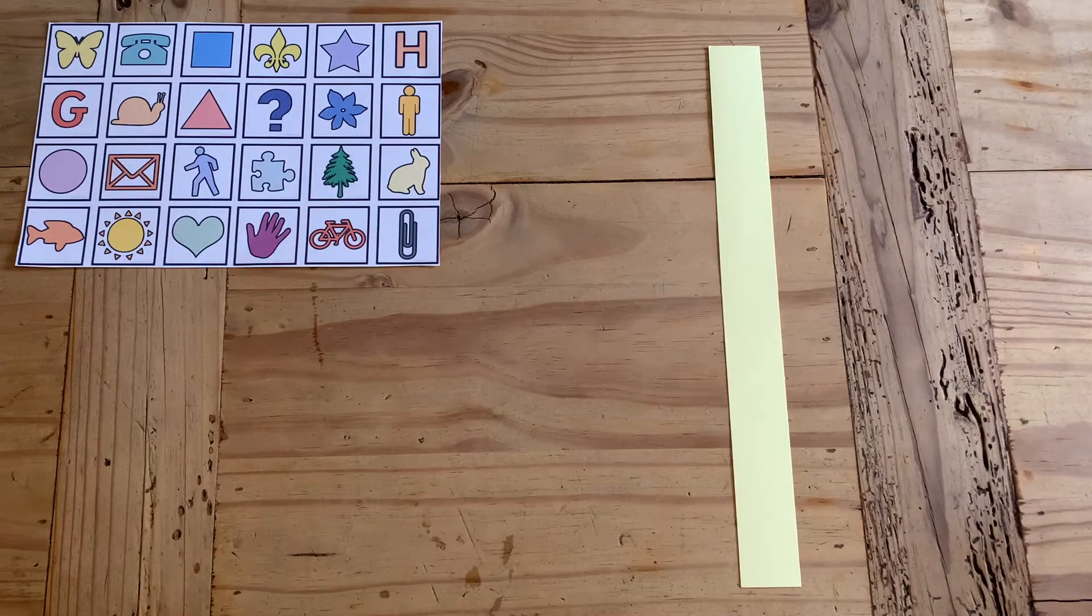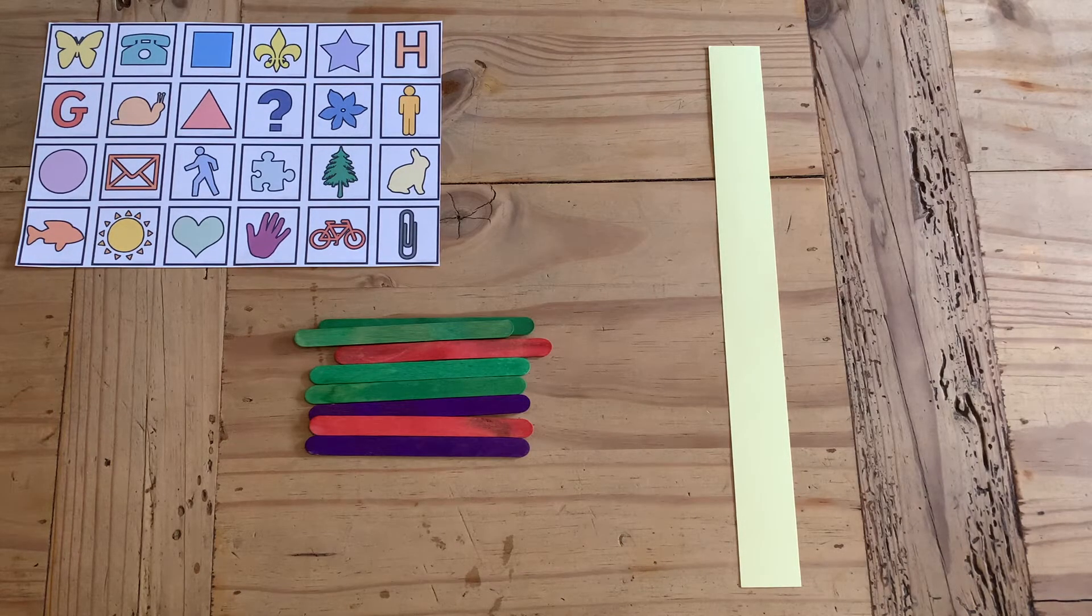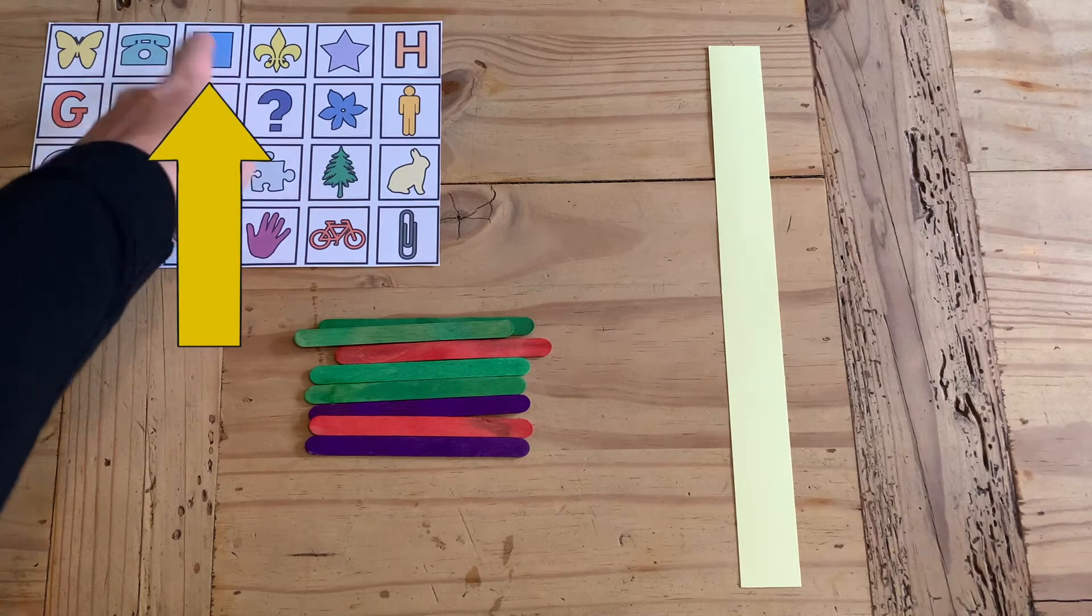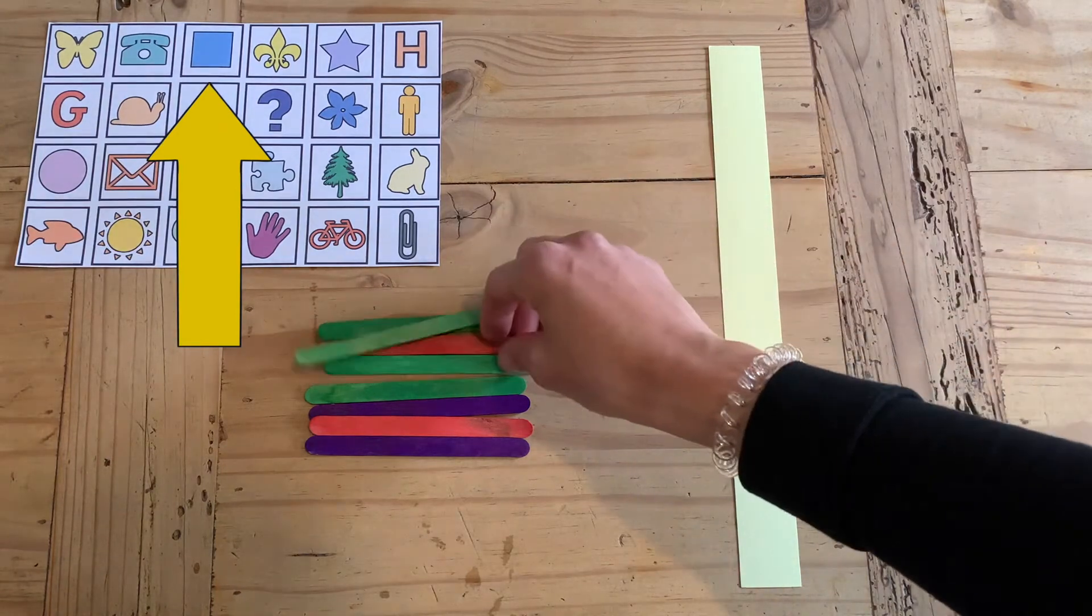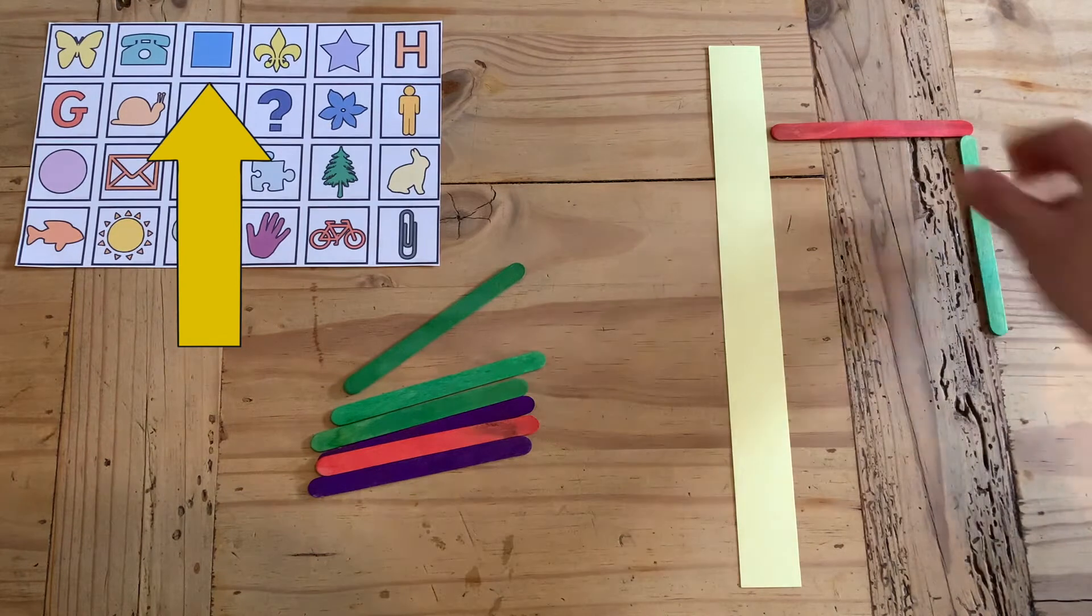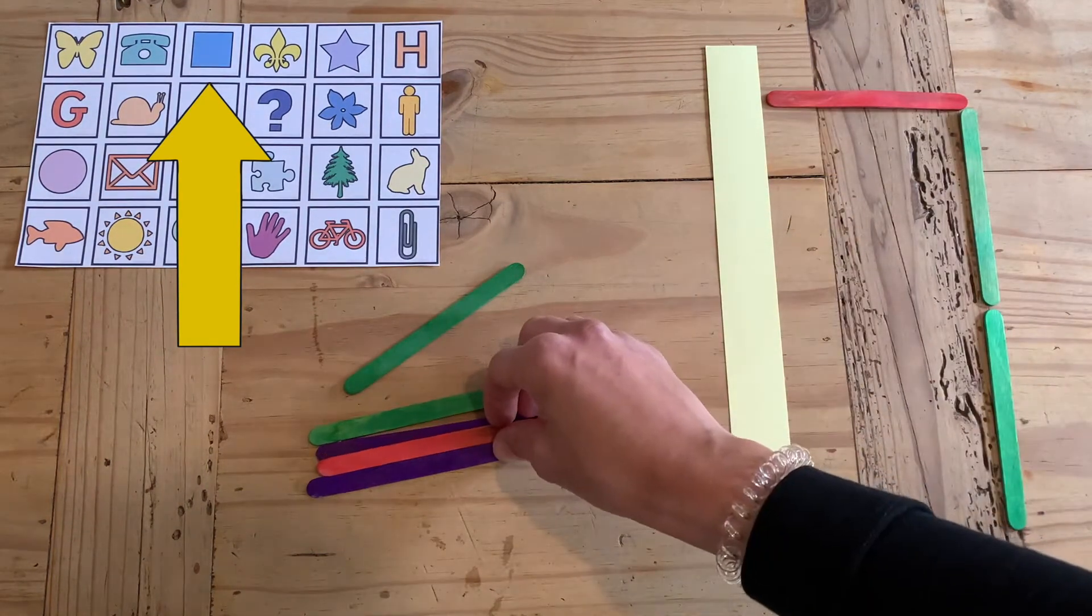Here's another way that you could reinforce the learning of symmetry. Give your children a line of symmetry, which could be a straight piece of card or a ruler, and they have to create a symmetrical shape using that line. Here you could use lollipop sticks like I have, or pom-poms, or any other crafty materials you have in the house or the classroom.